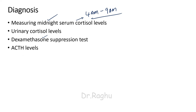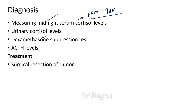We can also directly estimate ACTH levels. Regarding treatment, since the most common cause is iatrogenic steroid administration, steroids must be stopped. If the cause is a pituitary or adrenal gland tumor found on radiological examination, surgical resection of the tumor is performed. Sometimes medical adrenalectomy is also performed.